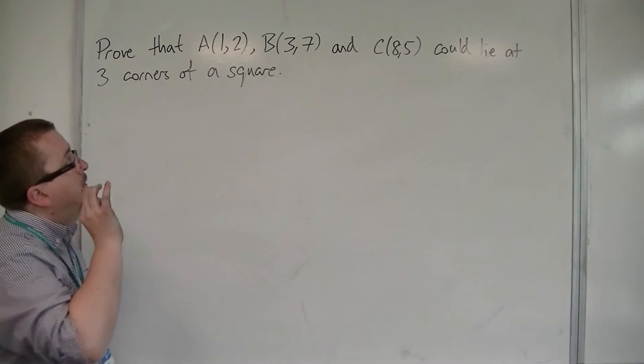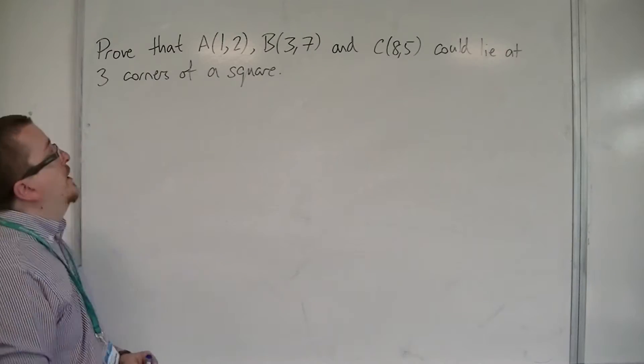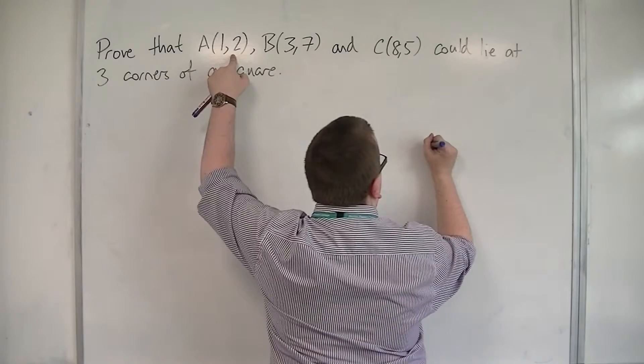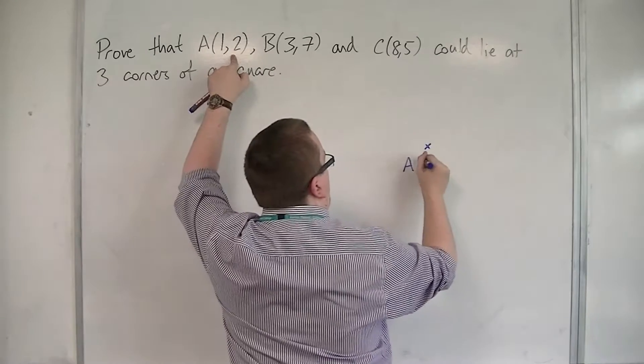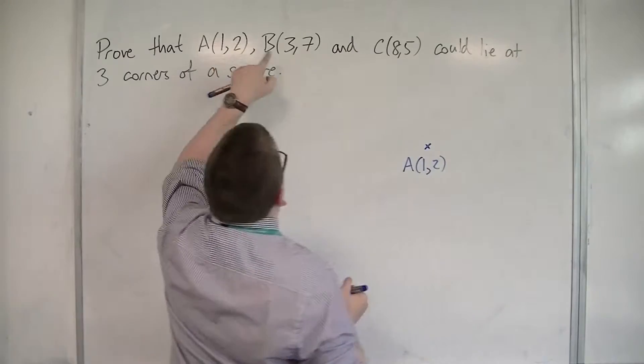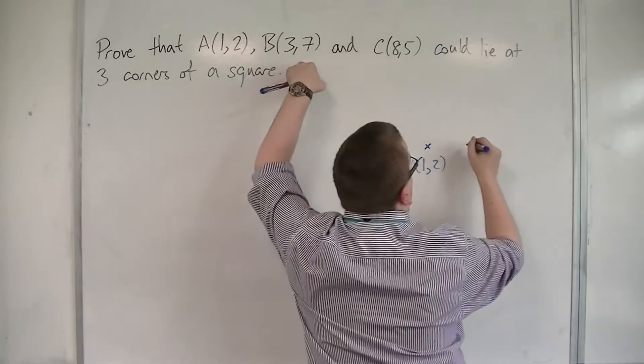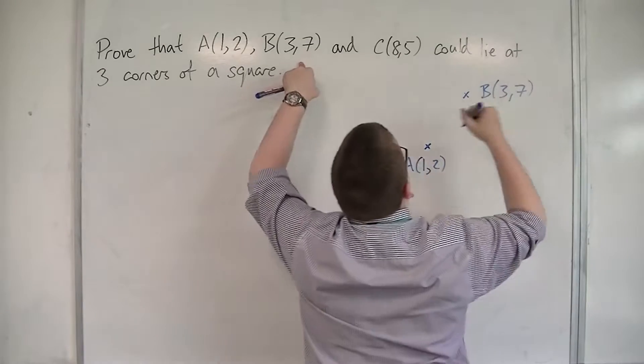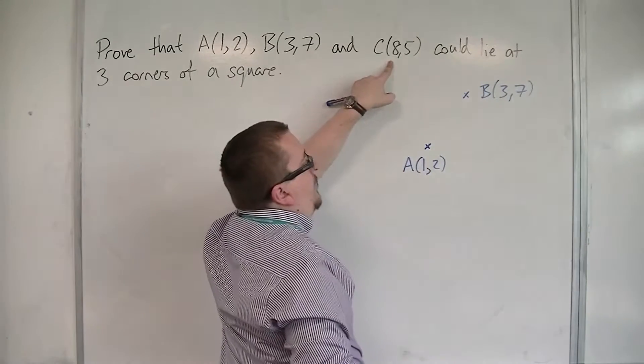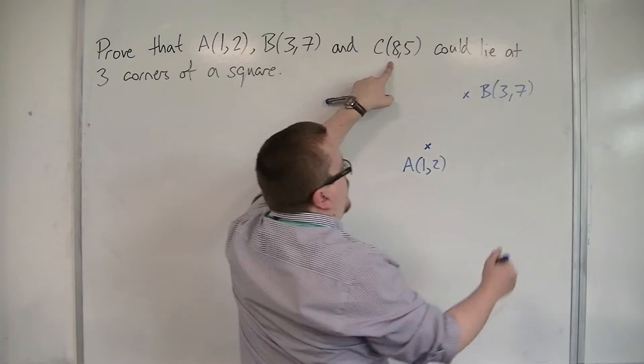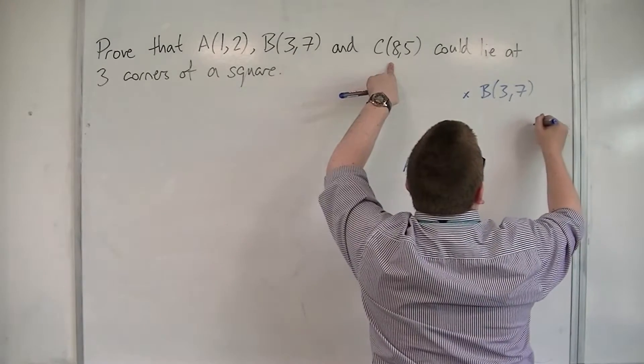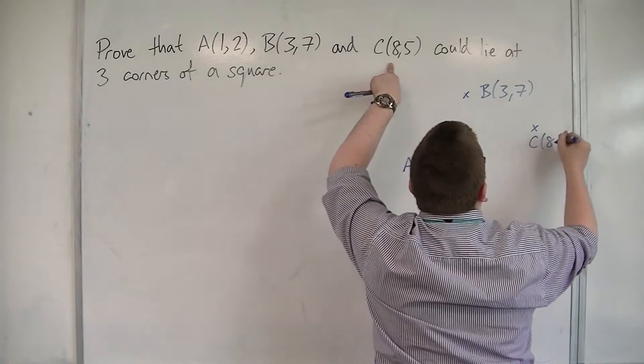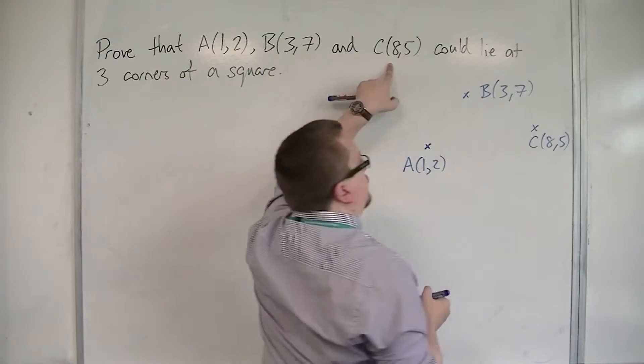First of all, it's very useful to draw a little diagram. So, if we think that A is 1, 2, so A is 1, 2, then we've got B is 3, 7, so a little bit along and further up. And then C is 8, 5, so further along but not quite there. So, something like that. So, there's C.